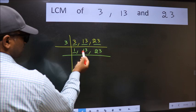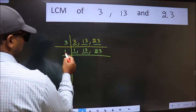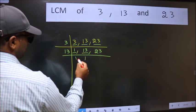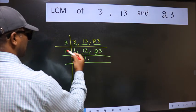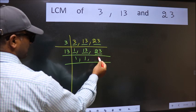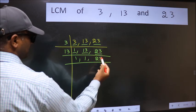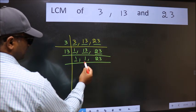So focus on the next number 13. 13 is a prime number so 13 divides 13. The other number 23 not divisible by 13 so we write it down as it is. Now we got 1 here and here.